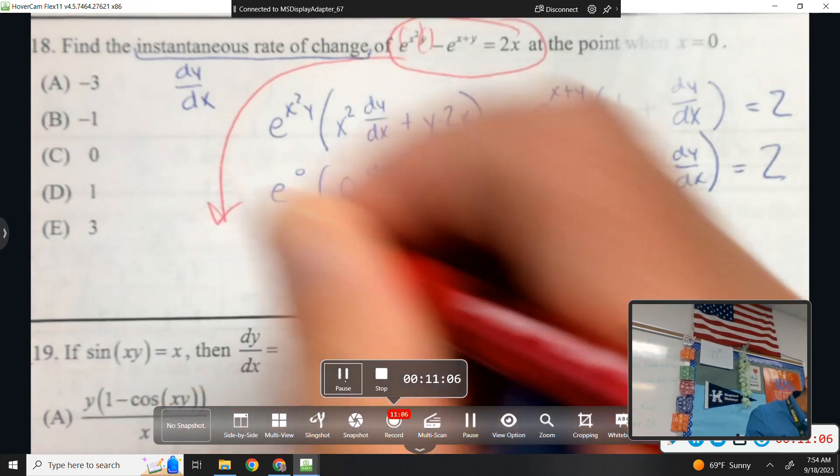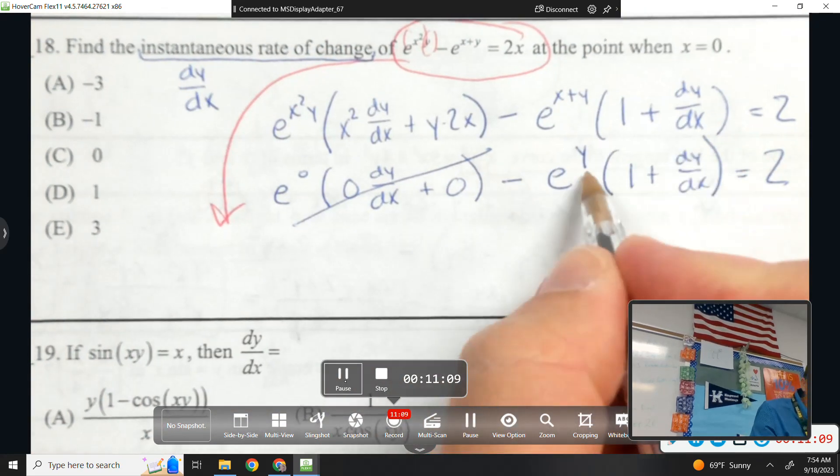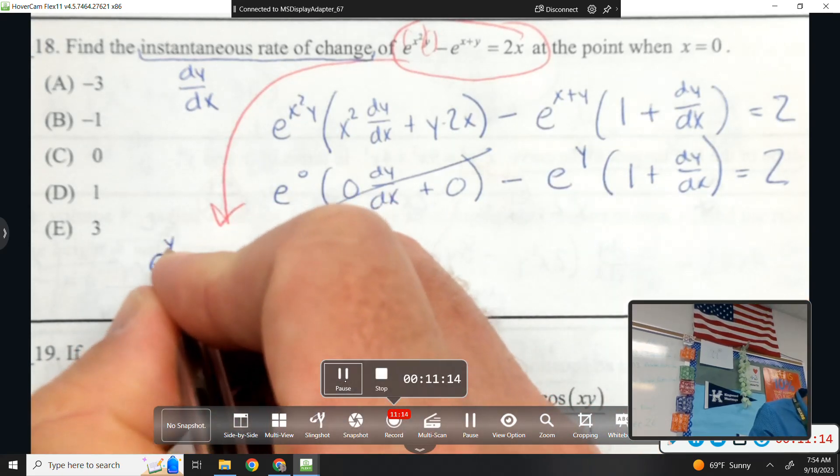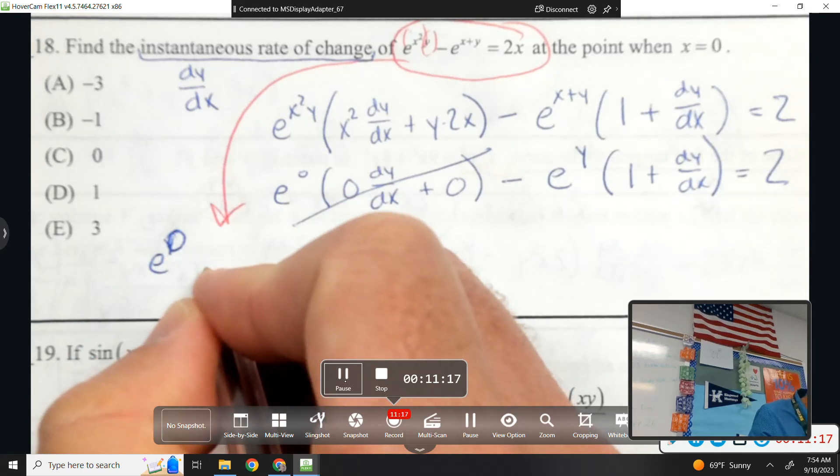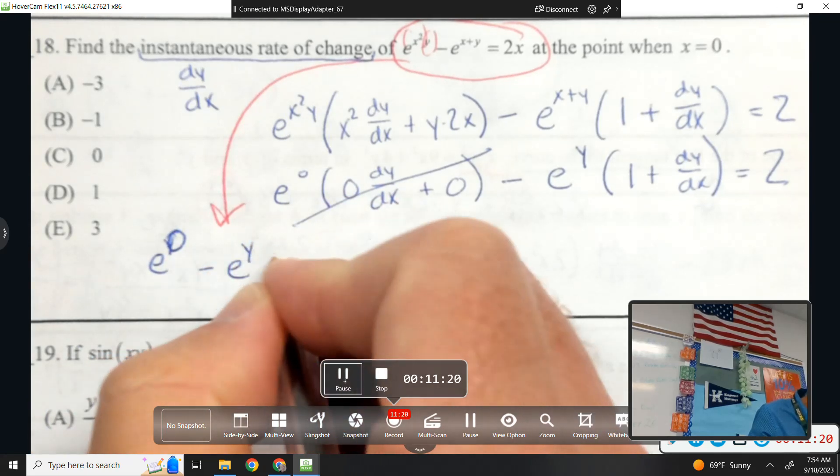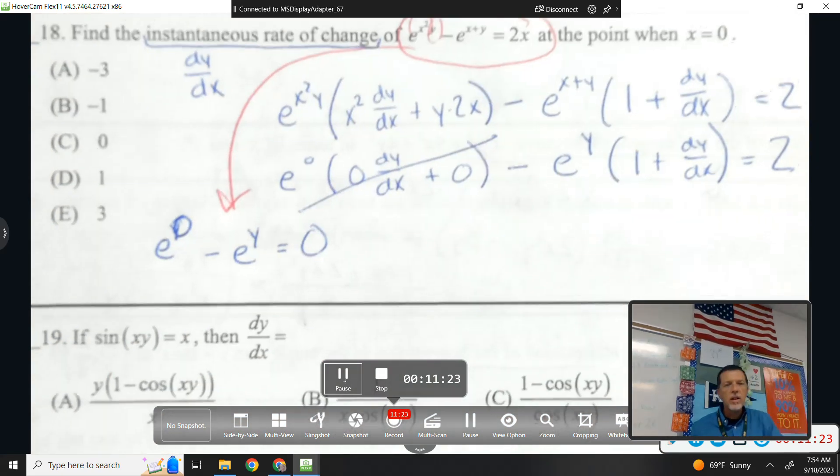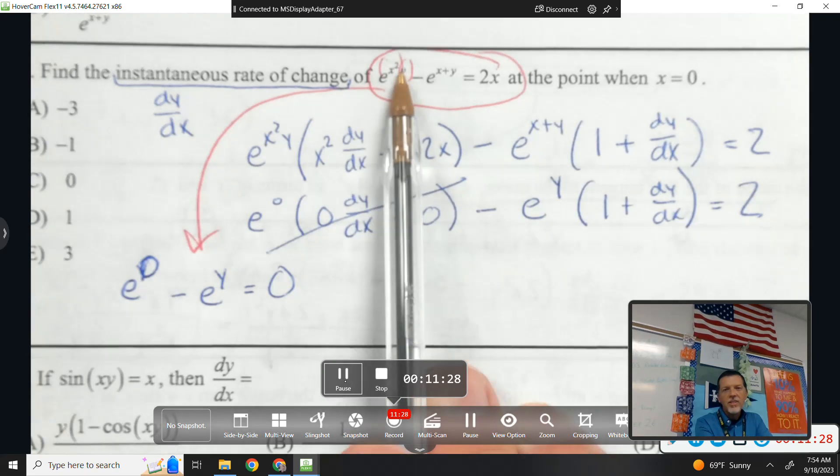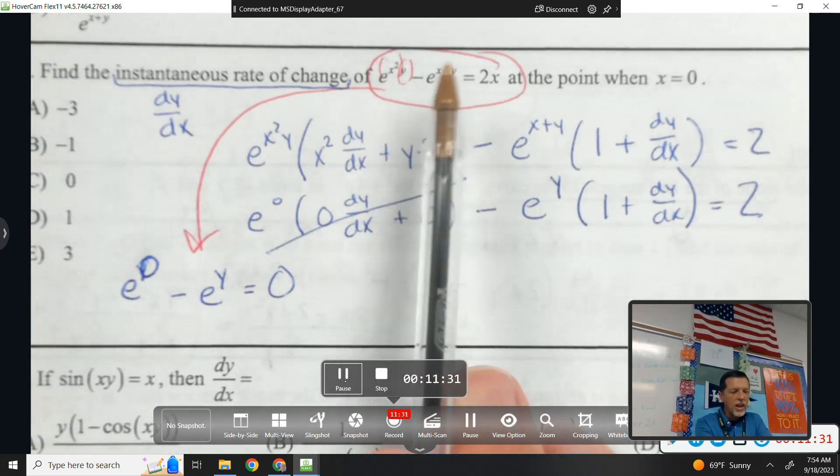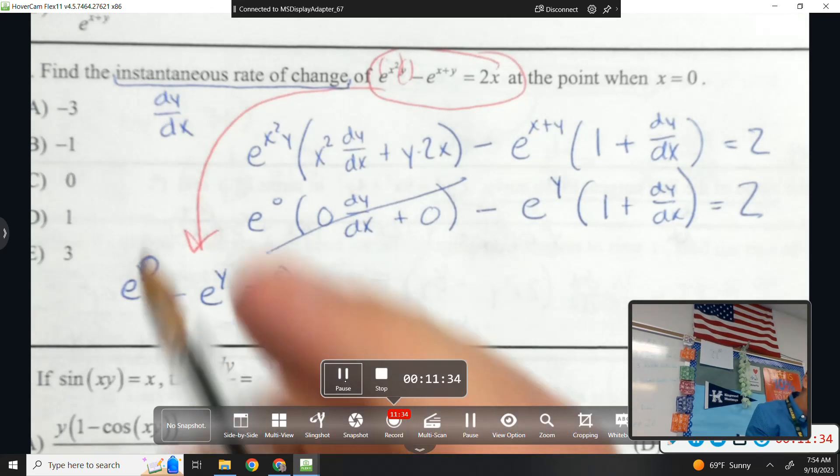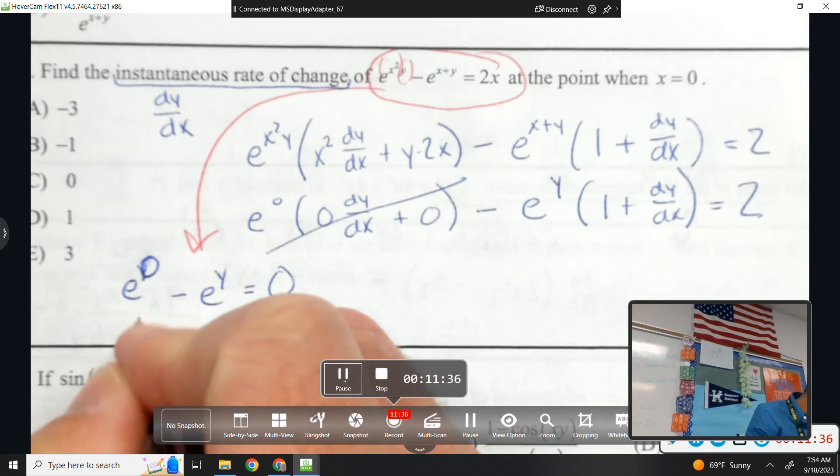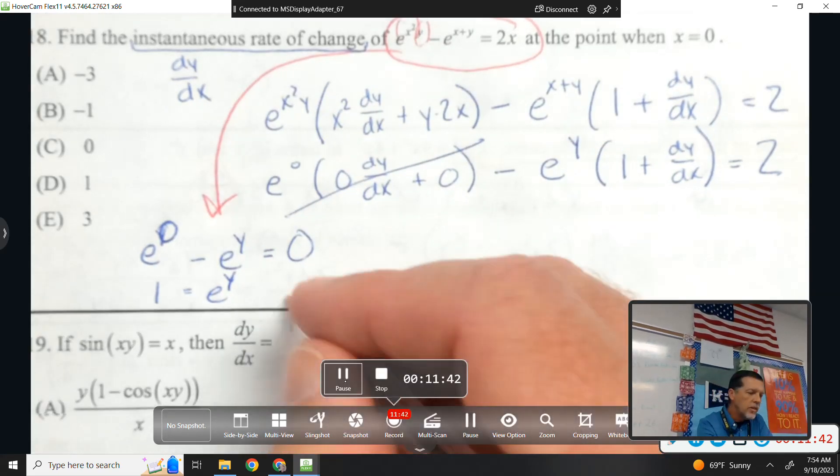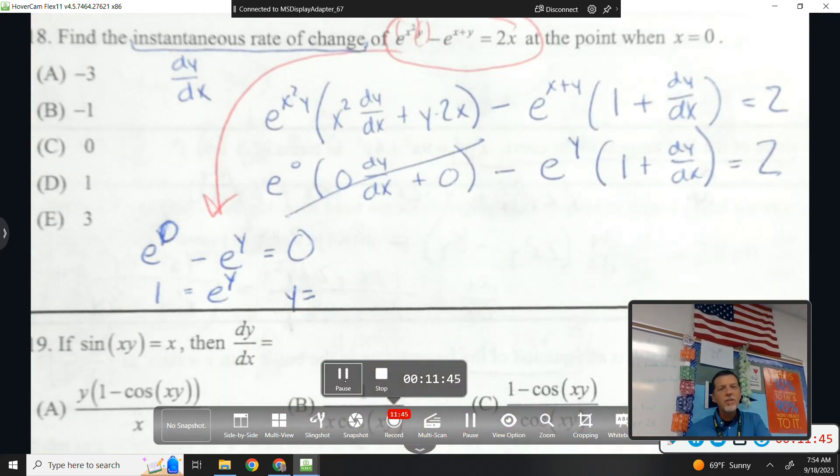I was trying to get away without doing it, but I need to know what y is. So let's plug in 0 for x. So e to the y. Nope, that's e to the 0. Minus e to the y equals 0. Right, because if x equals 0, I get 0 for that exponent. I get y for that exponent. I get 0 on the other side. e to the 0 is 1. I'll move e to the y over. So if e to the y is 1, what does y have to be? 0.